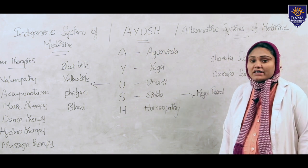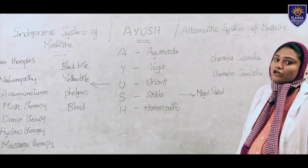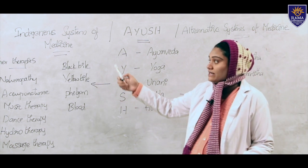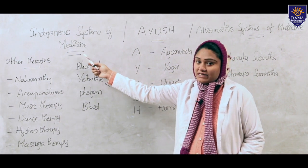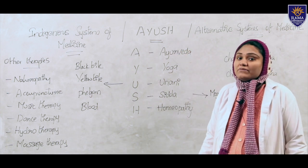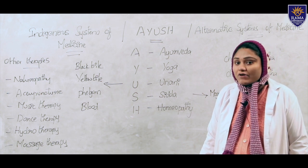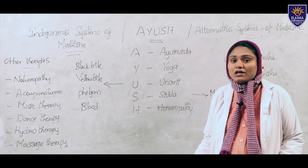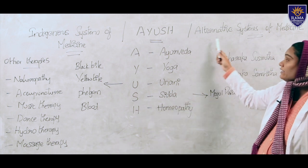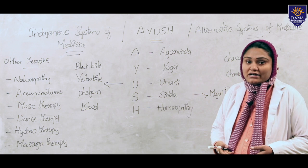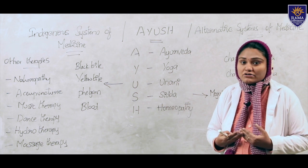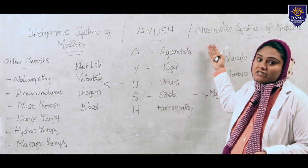AYUSH is a general topic nowadays, but we have some different names to explain it in detail. The other names are Indigenous System of Medicine and Alternative Systems of Medicine. Nowadays so many people are following AYUSH medicines compared to allopathic medicine, and from the Mughal period onwards we have had different types of medicines for various disease conditions.